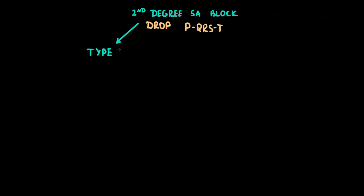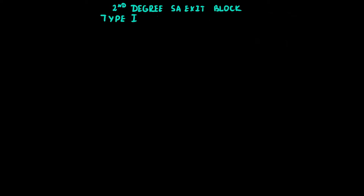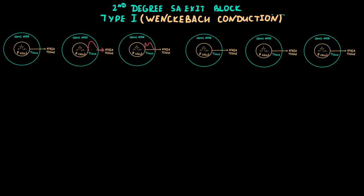The second degree exit block is represented by dropping PQRST, and is further classified into type 1 and type 2, just like AV block classification. Second degree sinoatrial block type 1 is characterized by Wenckebach conduction, meaning the progressive lengthening of conduction time through the T-cells until the sinus impulse is not conducted to the atria and PQRST is dropped. After the drop, the conduction properties of T-cells are restored, and the cycle repeats.